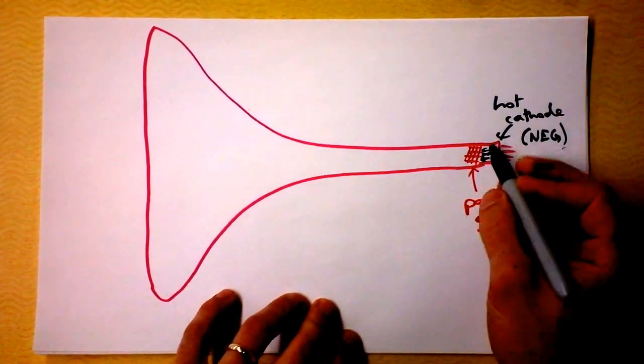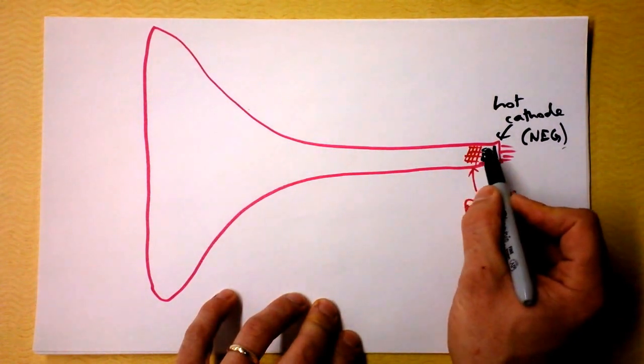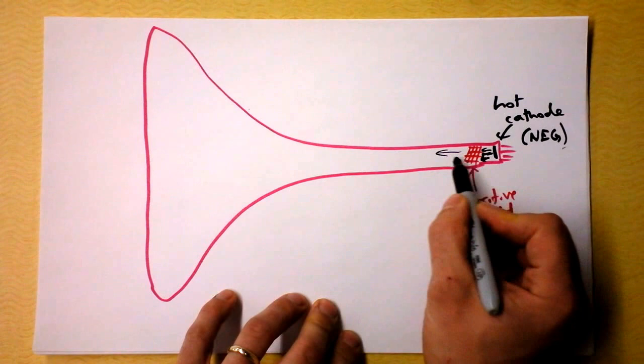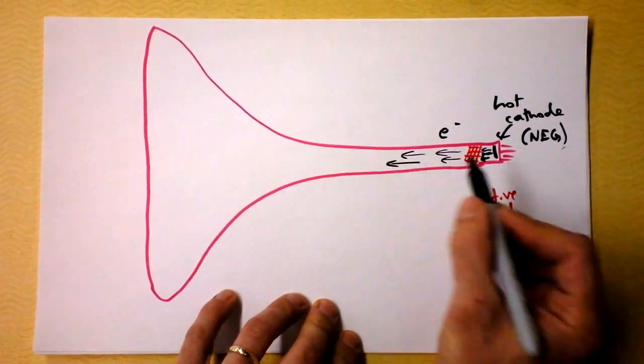So some of them hit the positive grid, and that sucks because they don't get to do anything. But some of them make it through, they just happen to be aimed right smack into the middle of the grid. In fact, quite a lot of them go through here, and so we've got these electrons that are going really fast this direction.